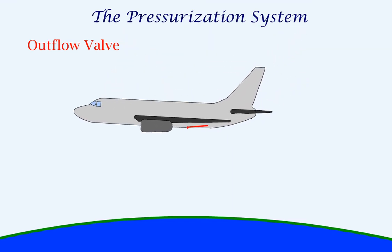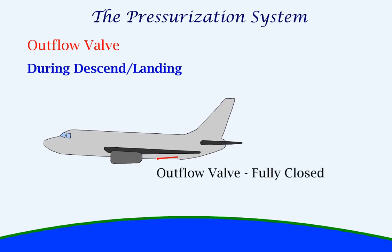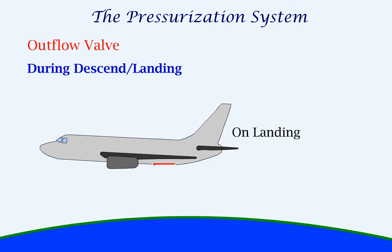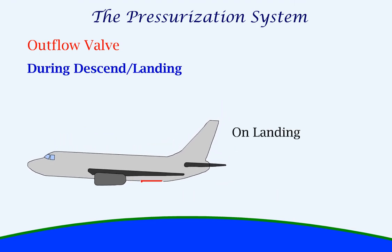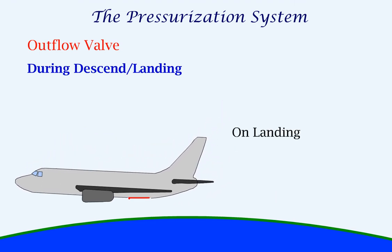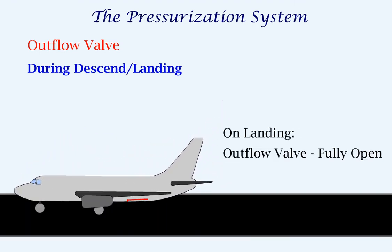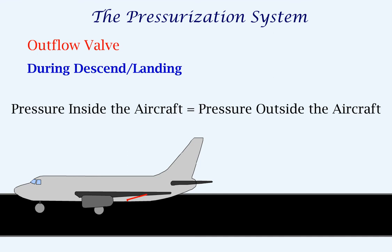During descent, the outflow valve is fully closed so that the pressure inside the aircraft increases. When the aircraft touches down on the ground, the outflow valve will fully open so that the pressure inside the aircraft is the same as the ambient pressure.